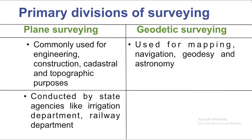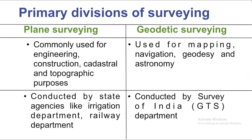Plane surveying is used by state agencies such as the irrigation department and railway department. Geodetic surveying is used by the Survey of India department. It is called the GTS, which stands for the Great Trigonometrical Survey.